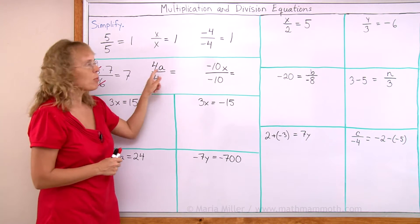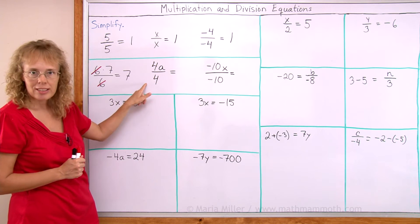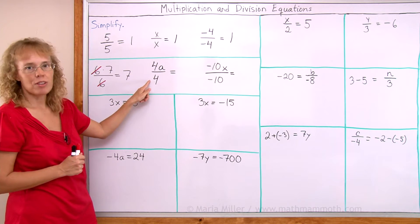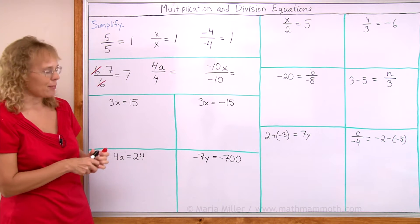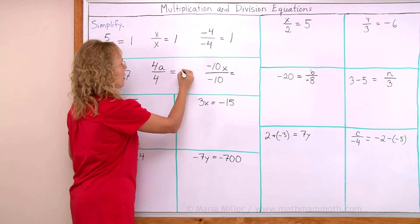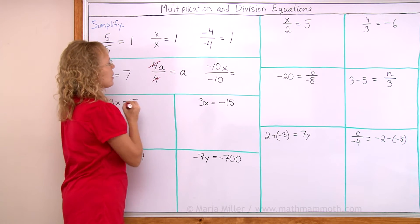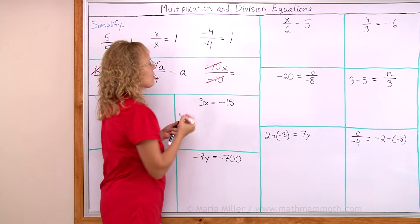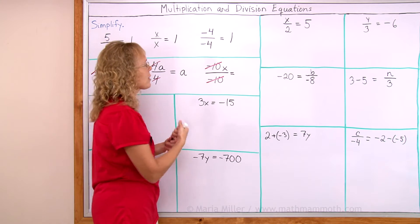Over here is a variable there. 4a divided by 4. The 4s cancel and we are left with only a. Or think of it as 4 divided by 4 being 1. And then 1 times a is a. So the 4s cancel here. And here, the negative 10s will cancel. Or you can think of it as negative 10 divided by negative 10 is 1. So we just are left with 1 times x.